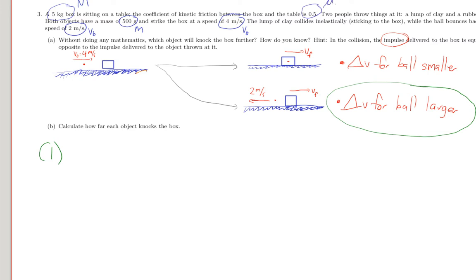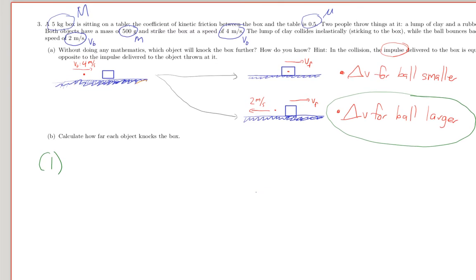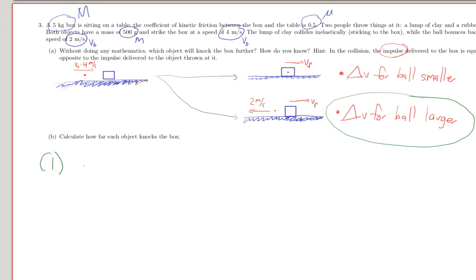So, how far does each object knock the box? Well, for the one that sticks, which will be the easiest one to do, the initial momentum only comes from the ball, and that's equal to the combined total momentum, they're both moving together, vf.